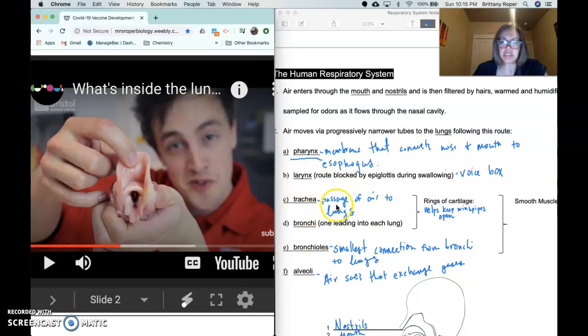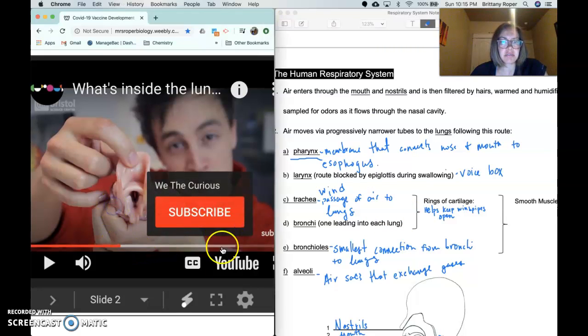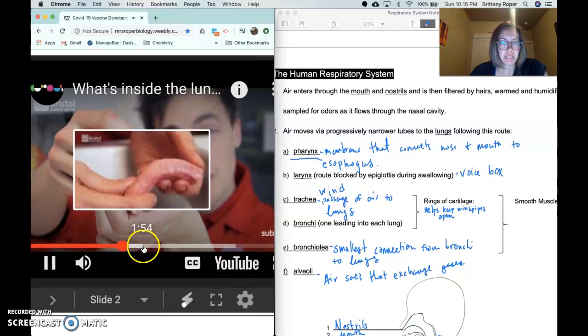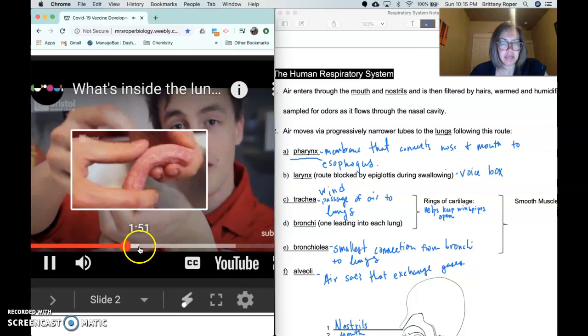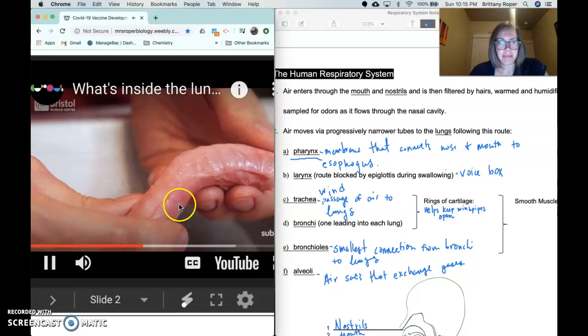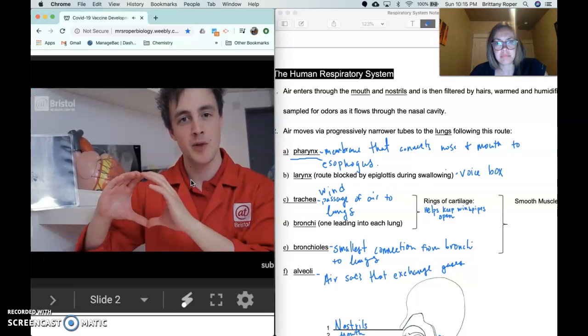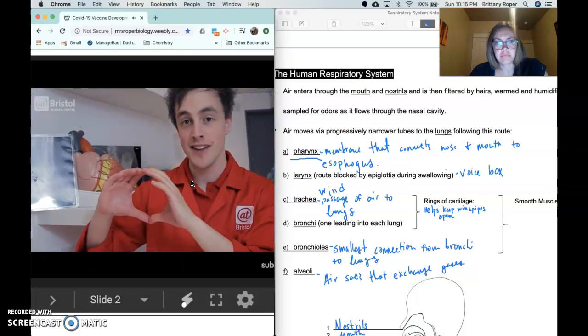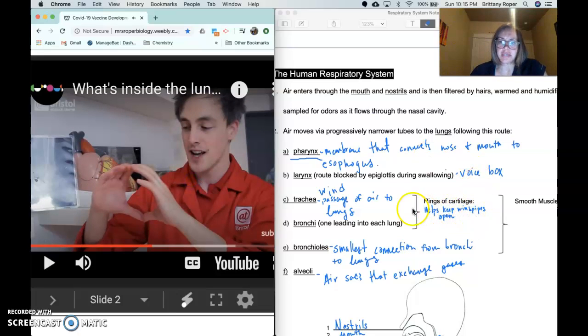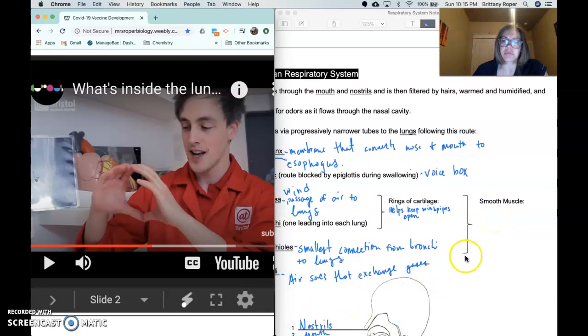He's already talked about the trachea, which is the windpipe, essentially. That's how you get the passage of air to the lungs. And he's about to move on towards the lungs. But what we can see here are some rings of cartilage. So these rings of cartilage help to keep the windpipe open, giving the air a clear passage going down to the lungs. So the rings of cartilage, as I've written here, helps keep the windpipes open. And then that smooth muscle is what's going to help to do the contraction of breathing.